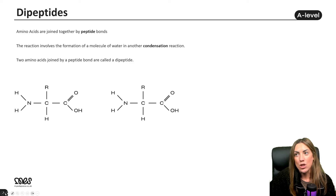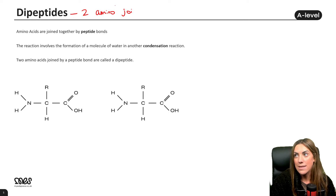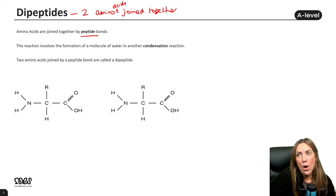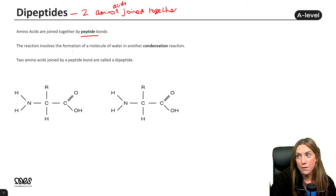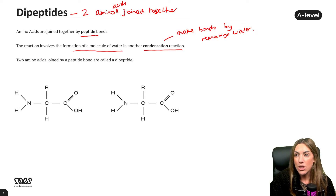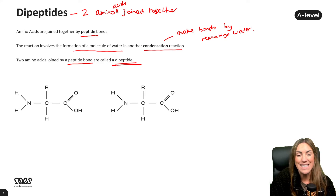When two amino acids join together, we call it a dipeptide — two amino acids joined together. They are joined with a peptide bond. You might remember that in carbohydrates we had glycosidic bonds, and in lipids we had ester bonds; in proteins we have peptide bonds. The formation of this bond involves the removal of a molecule of water — it is another example of a condensation reaction, which makes bonds by removing water.